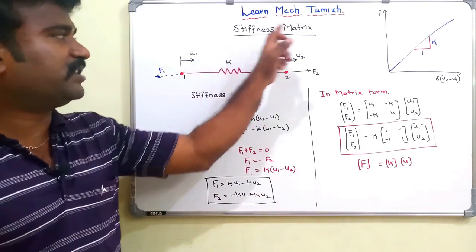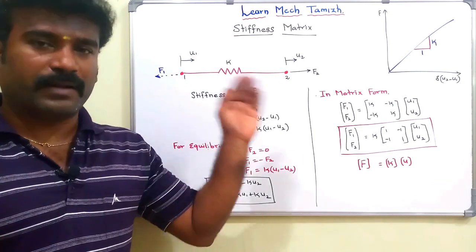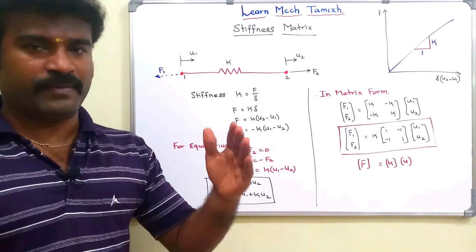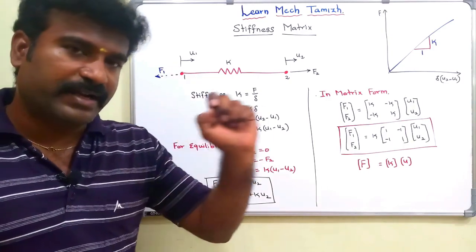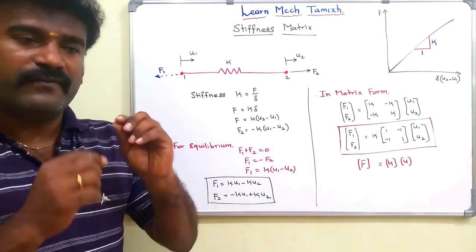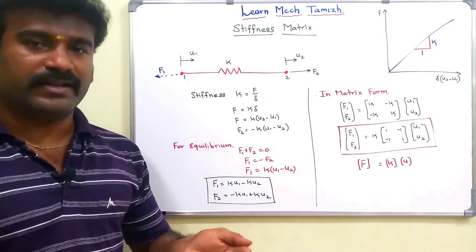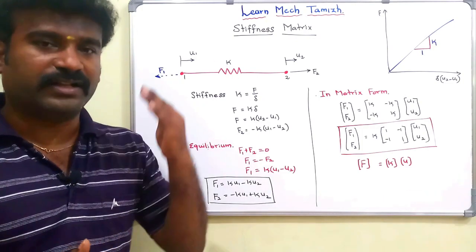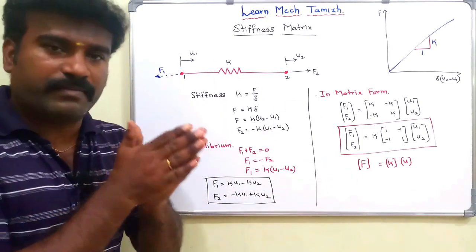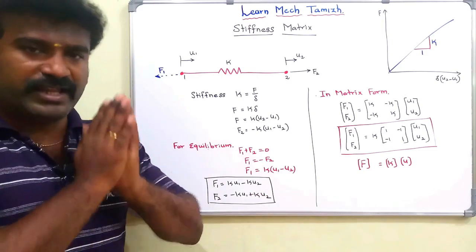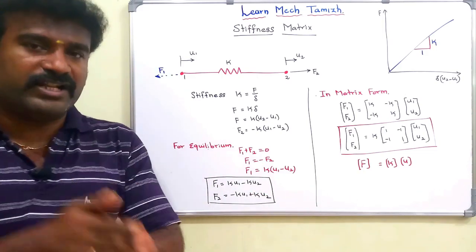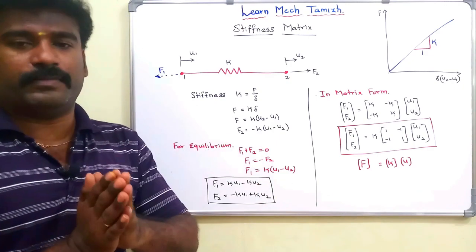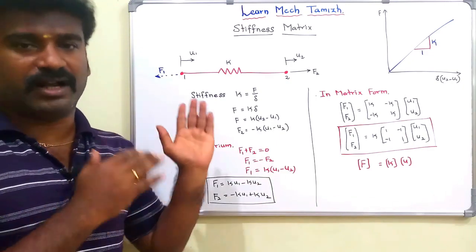Stiffness is a property of material to withstand deformation. In finite element analysis, we will evaluate the failure and what is the permanent deformation. If deformation occurs, we will evaluate the failure. That is the main property — stiffness. With this property, we will evaluate the displacement and temperature change. That is the main concept.